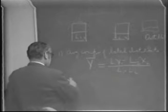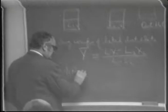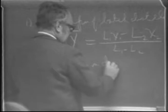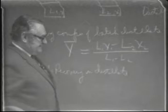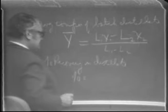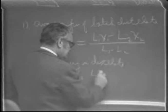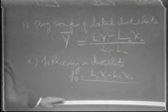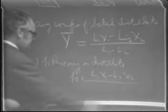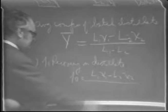Secondly, we might want to write down the percent recovery of the volatile component in the distillate. The numerator is the same: the amount in the distillate is L1X1 minus L2X2. Divided by L1X1, the initial amount. That's a fraction recovered times 100 to express it as percent.